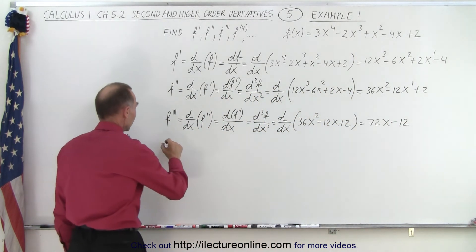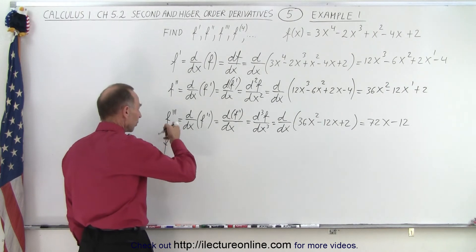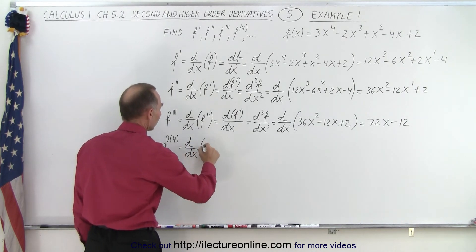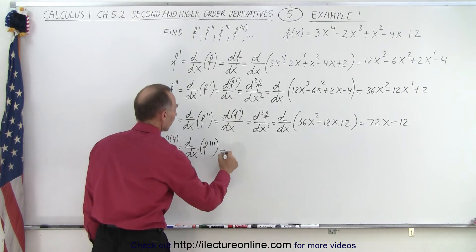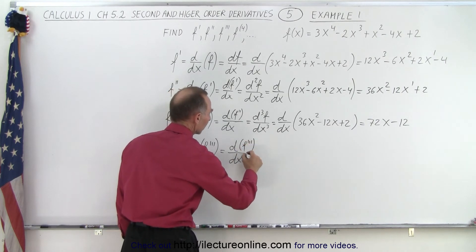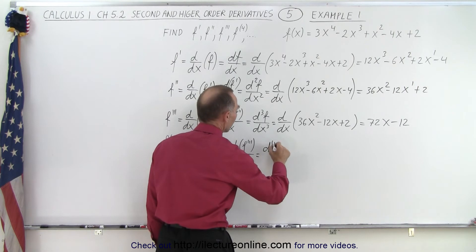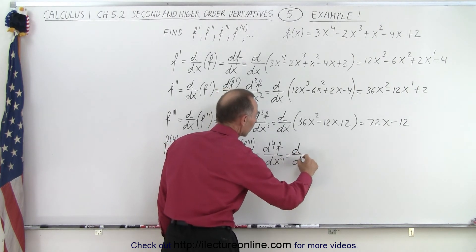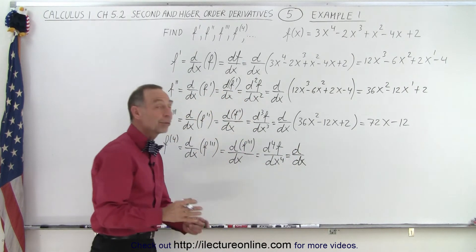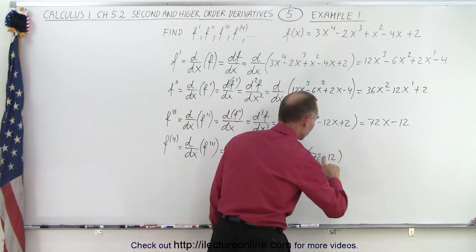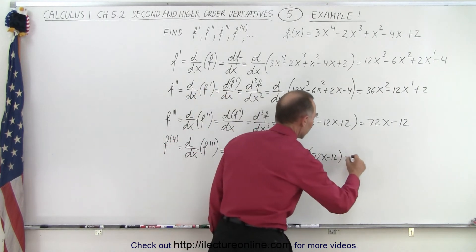Now we can take the fourth derivative. Instead of putting four tick marks, we put four in parentheses: f to the fourth. This is equal to d/dx of f triple prime, which is equal to d⁴f/dx⁴. The derivative with respect to x of the third derivative — and the third derivative is 72x minus 12 — gives us 72.